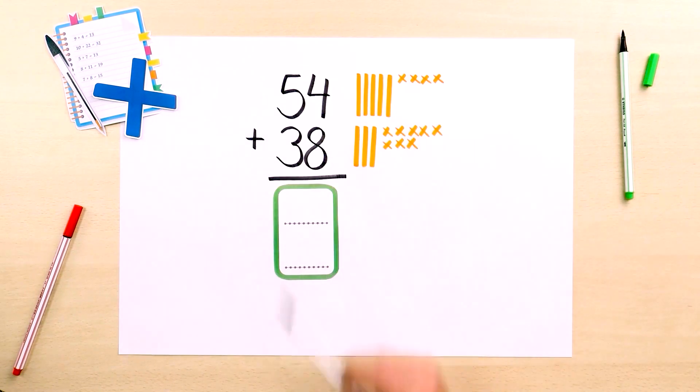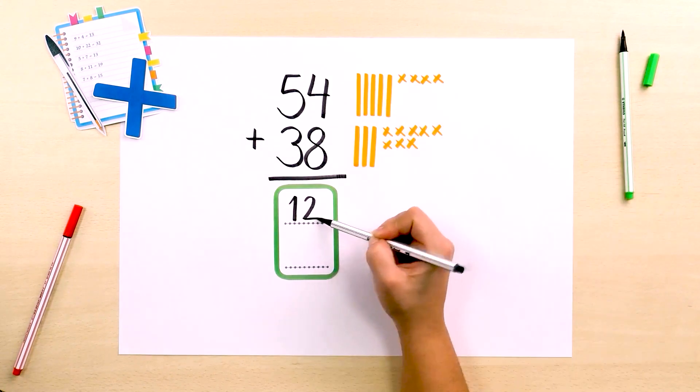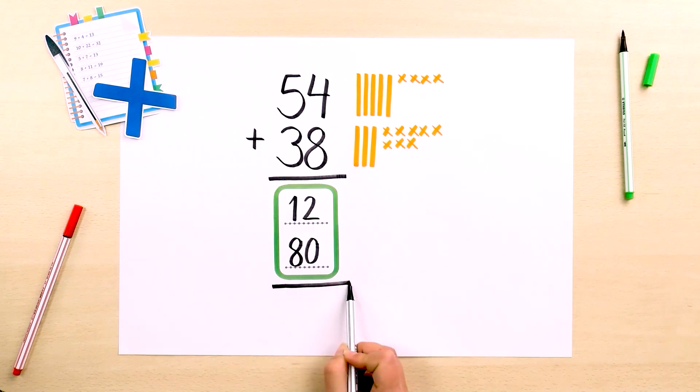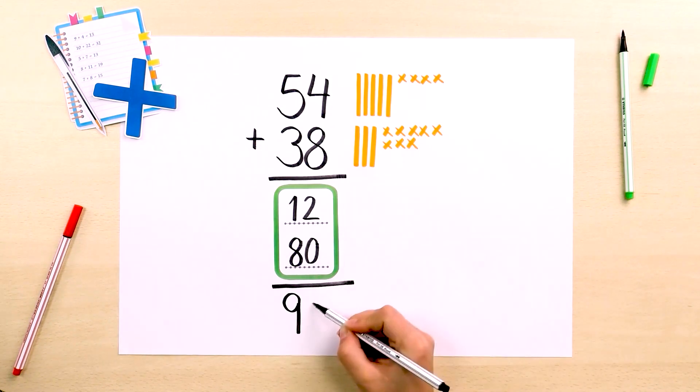Now we can start to put the units together. For example, 4 plus 8 makes 12, and 50 plus 30 is 80. In total, we have 80 plus 12, which equals 92 cubes.